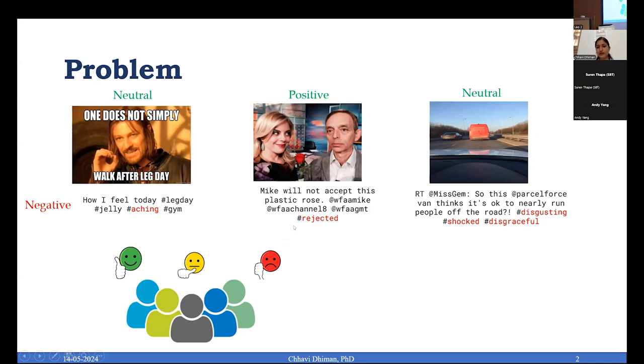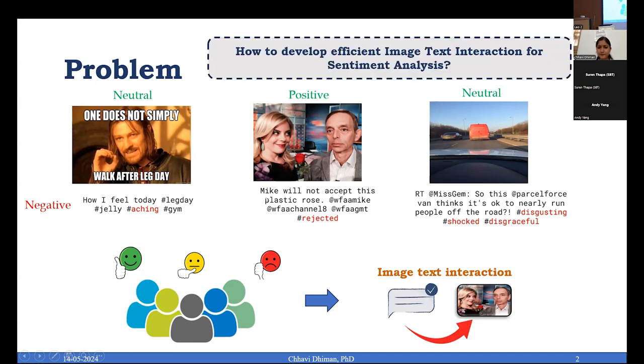If you see the second example, Mike will not accept this plastic rose. If you go with this particular caption provided for the second image, there is some kind of rejection, a negative sentiment. Whereas when you go with the image where a lady is offering a flower to a man, it shows positive sentiments involved.